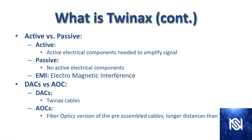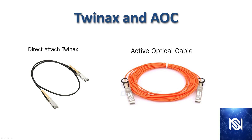DACs are what we call TwinX cables, and AOC stands for active optic cables. It's basically the fiber optic version of the pre-assembled cables and they can go longer distances than the TwinX ones. Here we have a picture of what these things look like. You can see the modules are pre-connected to the cables. The one on the left is a TwinX cable that's pretty short, and the active optical cable looks pretty much the same except it has an orange wire and the fiber optic connectors are a little bit different.